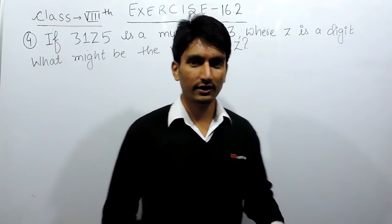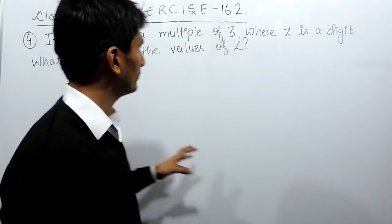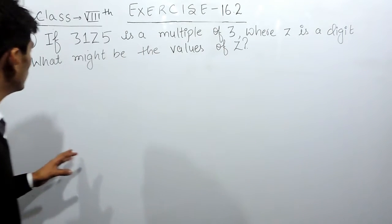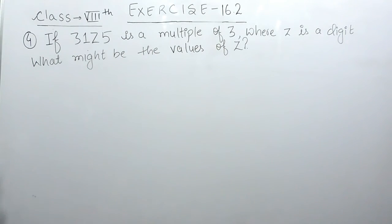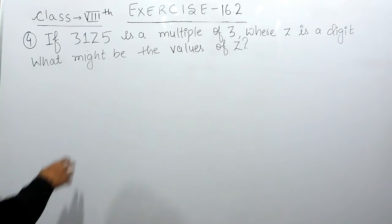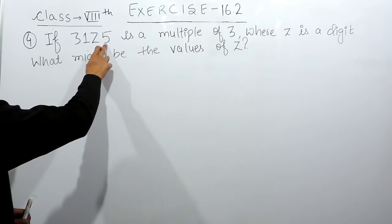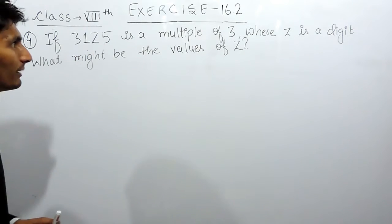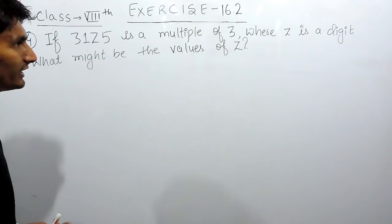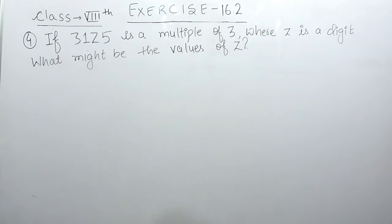Hello everyone. In this video we are going to solve question number 4 of exercise 16.2. The question says: if 3 1 z 5 is a multiple of 3, where z is a digit, what might be the values of z?